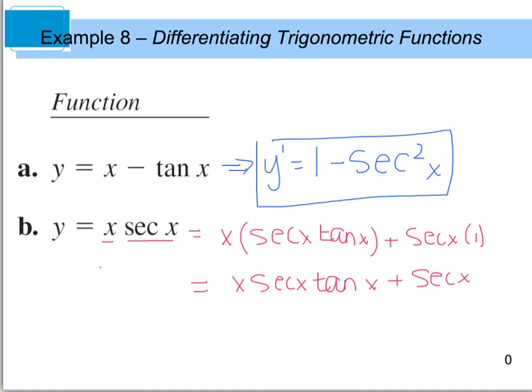And if you really wanted to, you could go ahead and factor out the secant x, since that's a common factor in both terms. And that would give you secant x times (x tangent x plus 1) inside the parentheses.